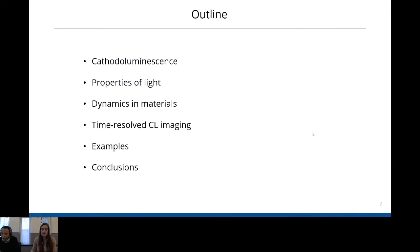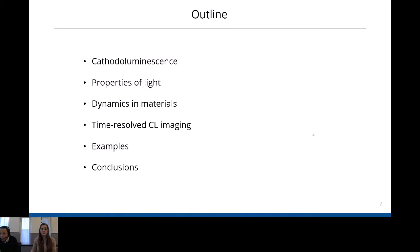This is a very rich topic and there's a lot to be said about it — you can talk for hours about it — but I will try to give a more general overview. I would like to acknowledge Sophie Muret, Magda Cisoda-Garcia, Eric Kieft, Anne Seilermacher, and Albert Polman for their contributions to this talk. I will briefly introduce cathodoluminescence, then talk about properties of light, dynamics in materials, how you can do time-resolved CL imaging, show some examples, and end with conclusions.